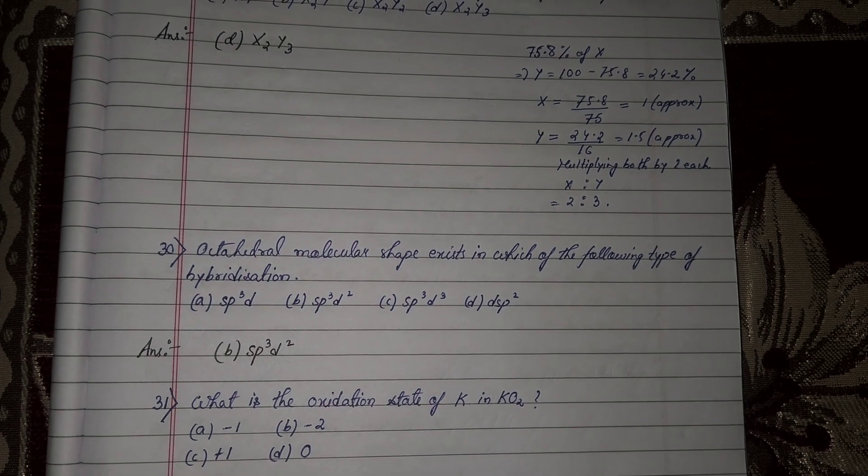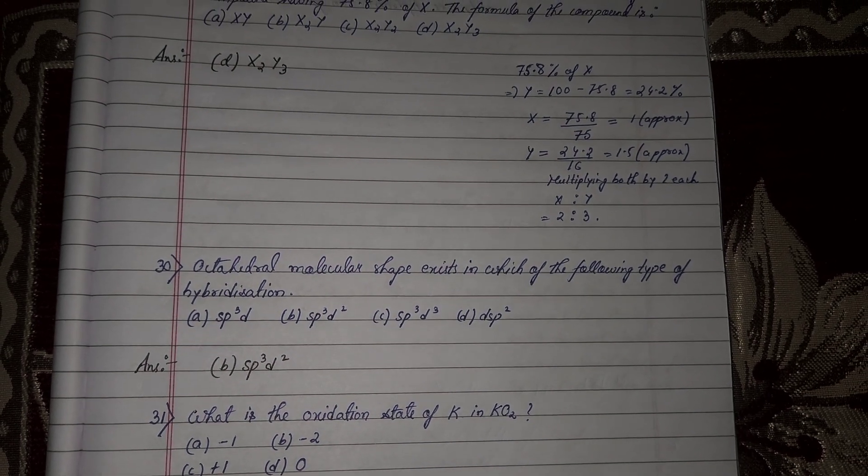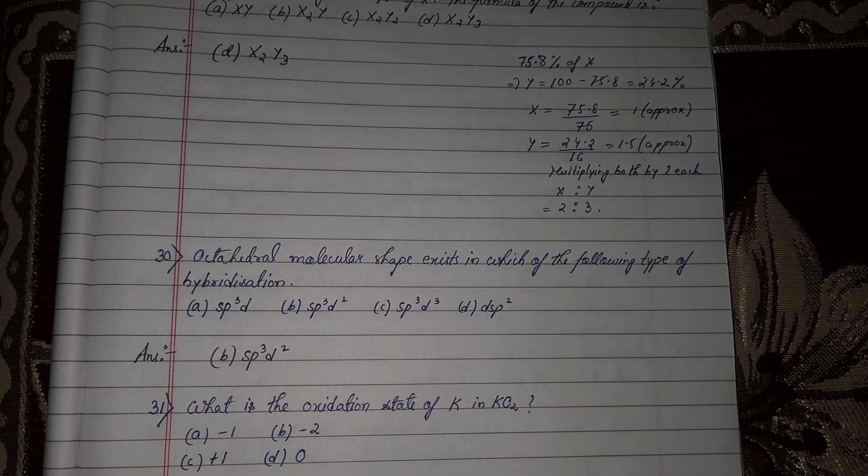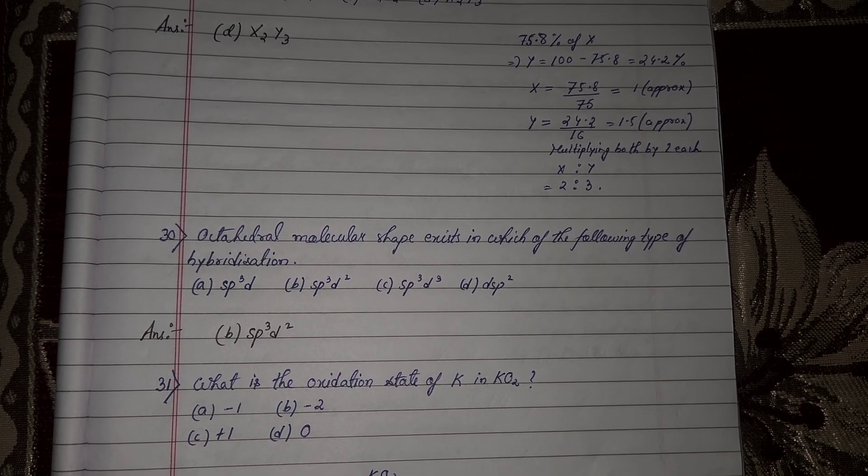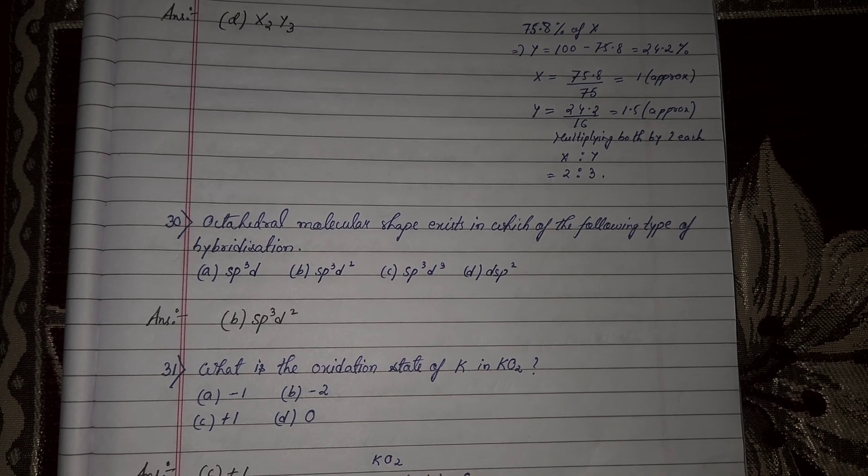Next question number 30, octahedral molecular shape exists in which of the following type of hybridization? Octahedral molecular shape, SP3 D2 hybridization. Option number B will be correct answer.